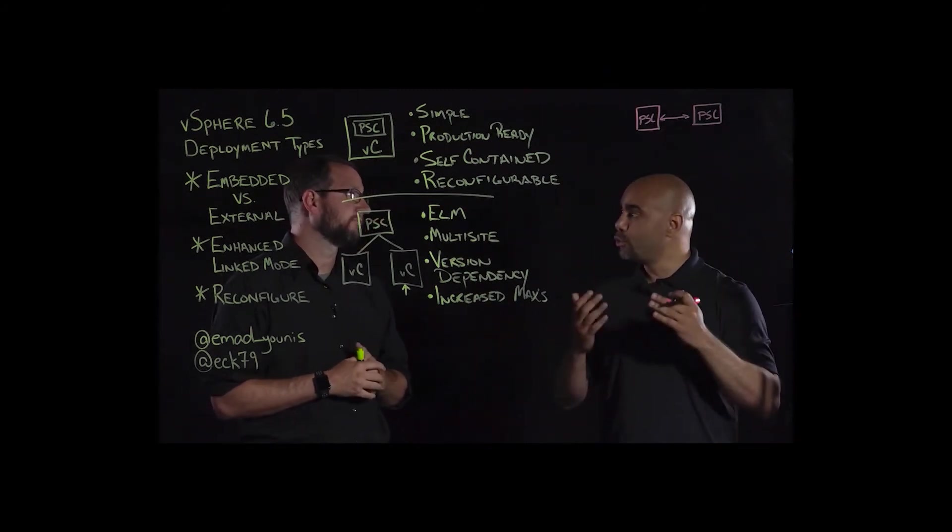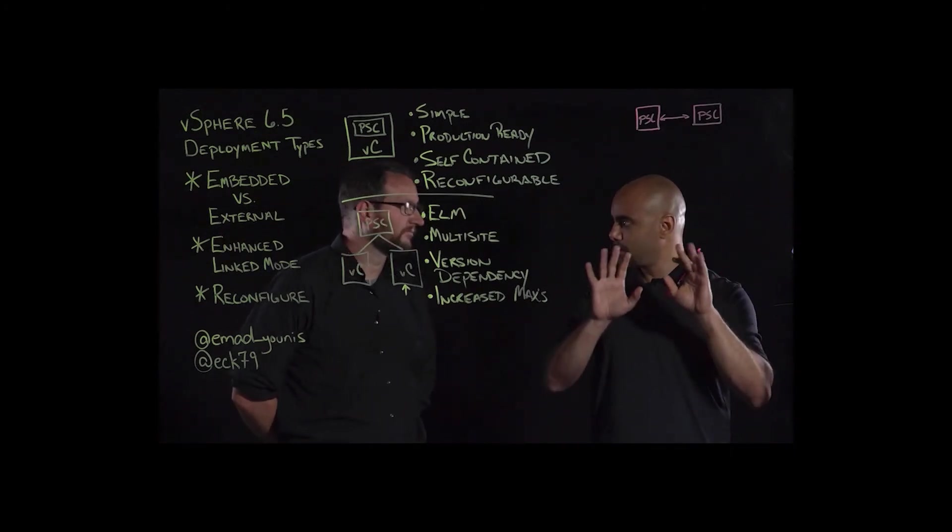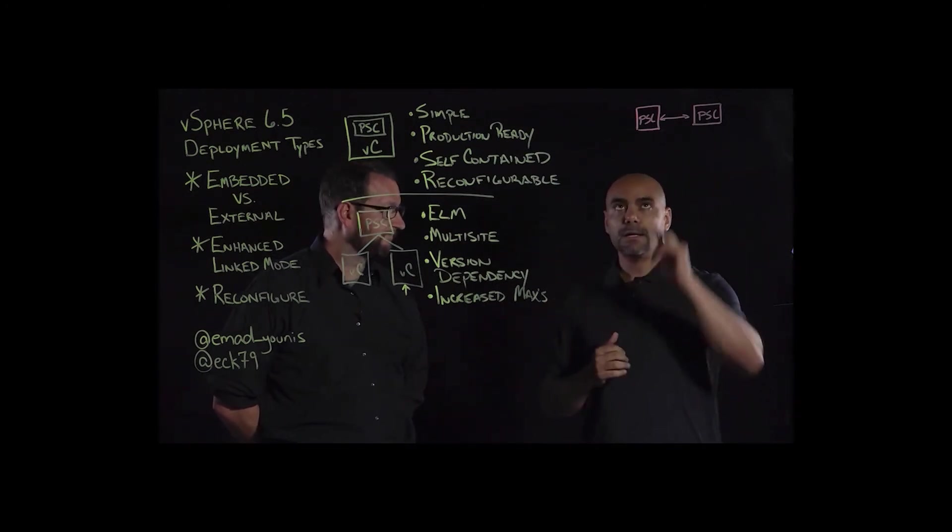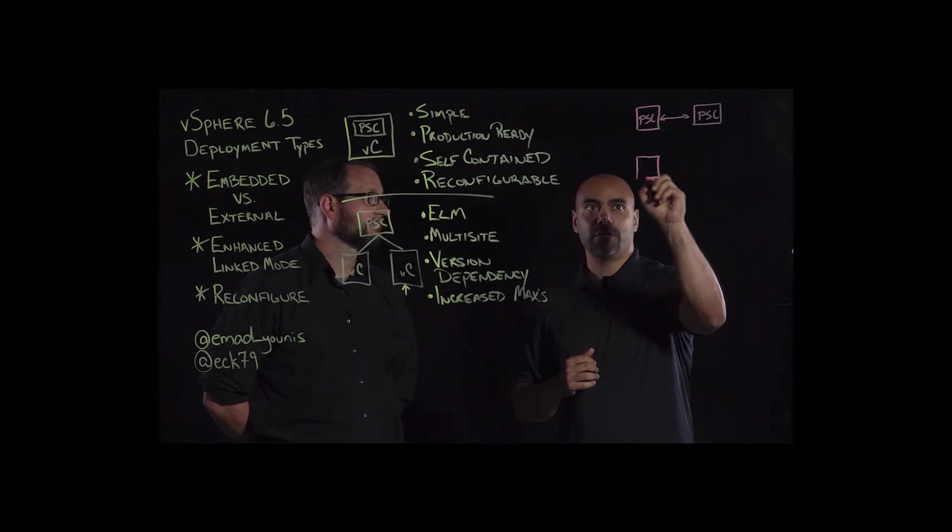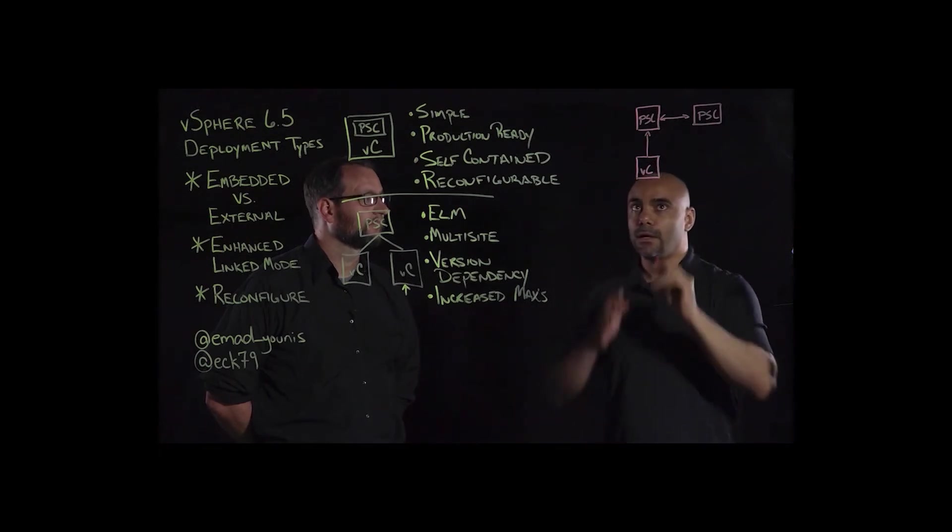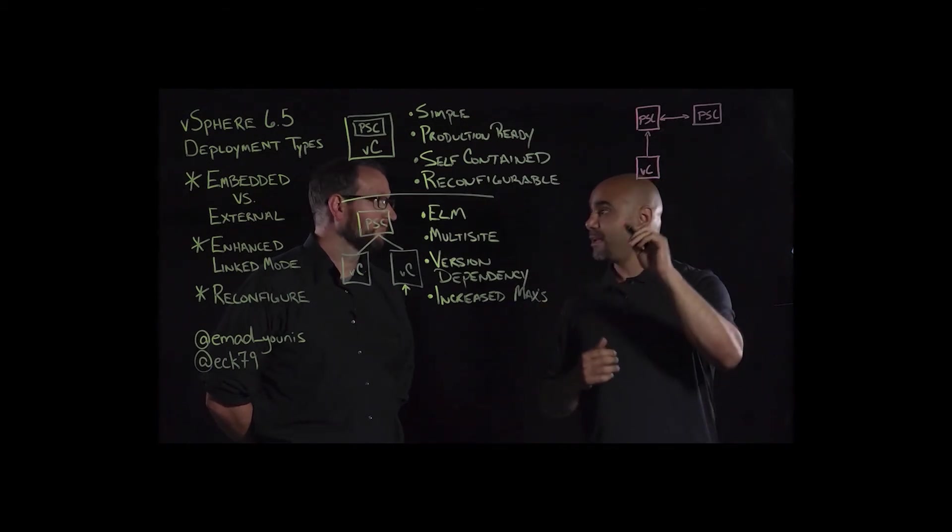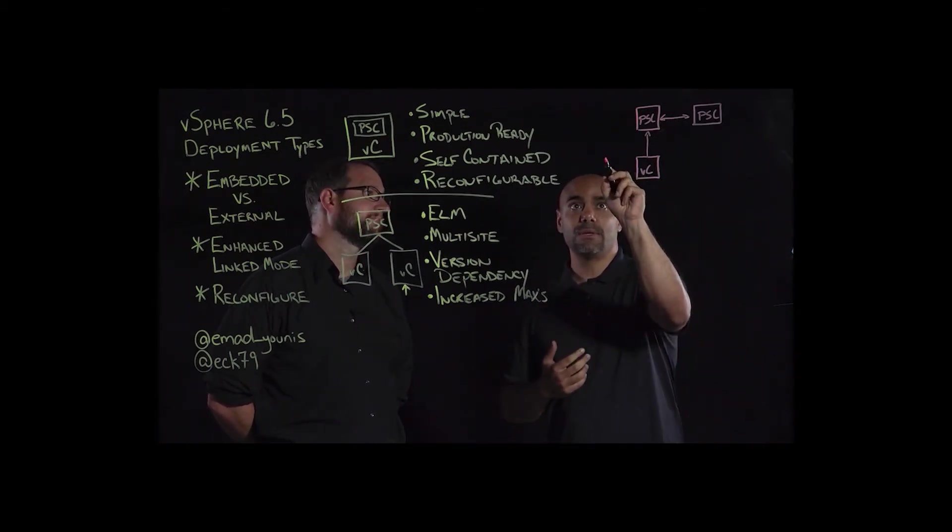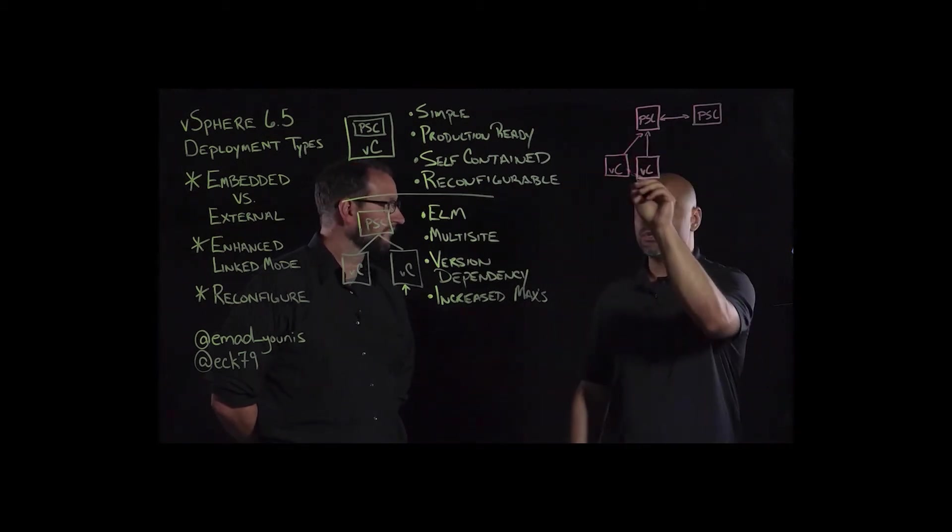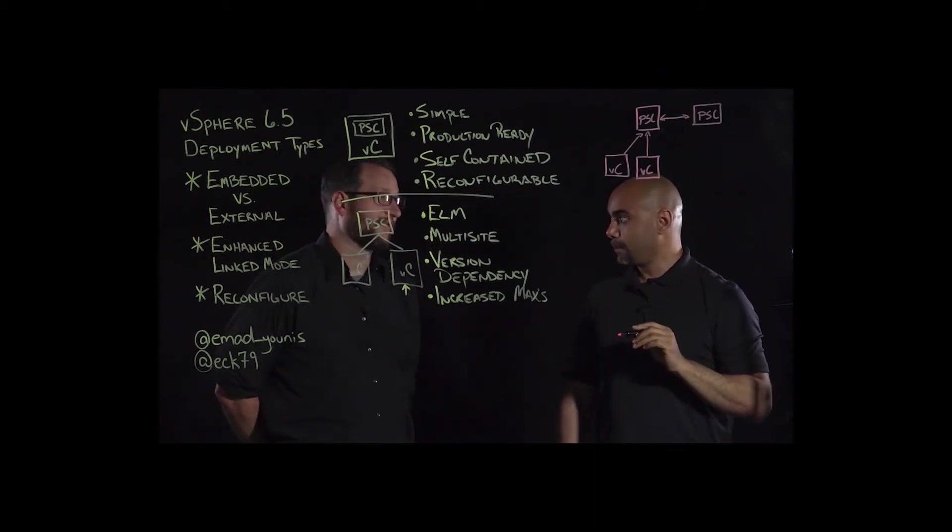So, here I have two external PSCs. It doesn't matter if they're same site or different sites. The point is, I need to have external PSCs that we're using for authentication purposes. Now, I'm going to draw my first vCenter server here. And I'm going to point it to this PSC. By merely doing this, I can manage this vCenter. If I want to add a second one to this same PSC, we can now manage both of these vCenters by logging in to any one of them.